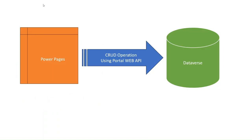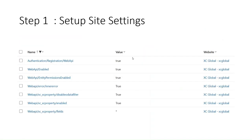Microsoft has already introduced a Dataverse API for Power Pages. There is a separate dedicated portal Web API, using which you can directly perform CRUD operations — create, retrieve, update, delete — by connecting to any Dataverse table through a Web API call. That means you can write JavaScript or jQuery to call the Web API that is exposed by Microsoft Power Pages, especially designed for Dataverse table interaction.